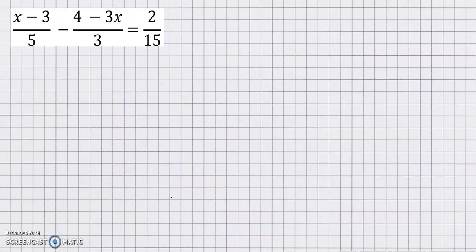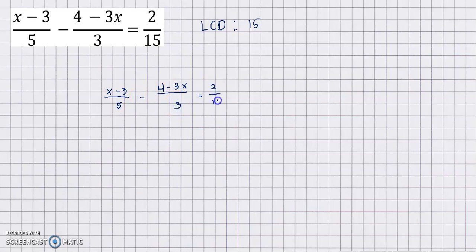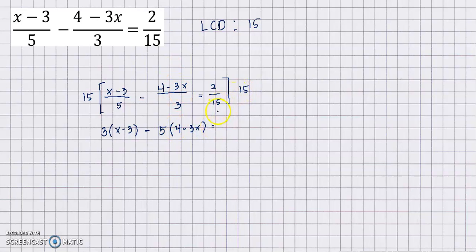For the next example, the LCD of 5, 3, and 15 is 15. We multiply both sides of the equation — (x minus 3) over 5 minus (4 minus 3x) over 3 equals 2 over 15 — by 15. So 15 divided by 5 is 3, times the numerator; minus 15 divided by 3 is 5, times that numerator; and 15 divided by 15 is 1, times 2 gives 2.